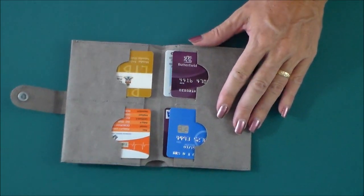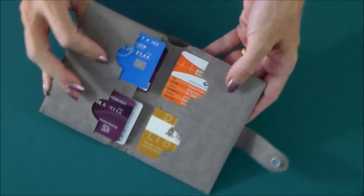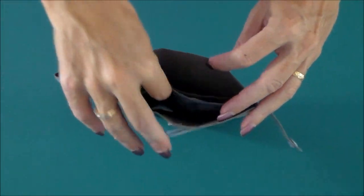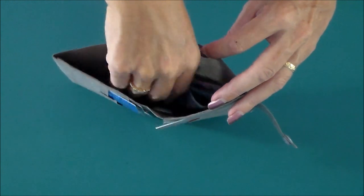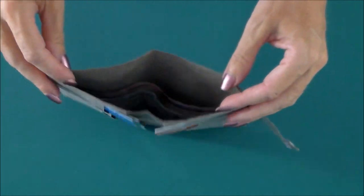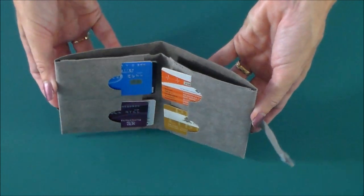And then up at the top of the wallet, there's a nice deep pocket for all of your notes, and there's plenty of room in there. If you wanted to slide in a slimline notebook, receipts, shopping list, or anything else...